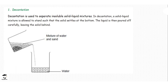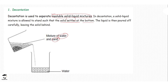Decantation is used to separate insoluble solid-liquid mixtures where the solute is insoluble in the solvent. An example of such a mixture is sand and water. You put these two in a beaker, add water, and stir the mixture. Then you give it a few minutes to settle. After the solid settles at the bottom, the liquid — in this case water — is poured off slowly and carefully into another beaker, leaving behind the solid. This is how decantation works.